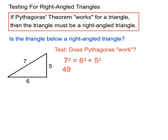49 on the left hand side when we do 7 squared. 6 squared is 36, and 5 squared is 25.